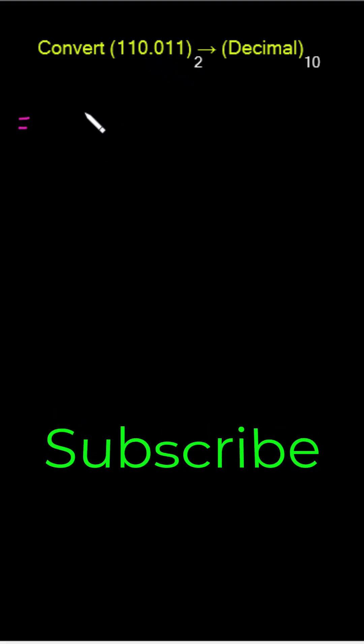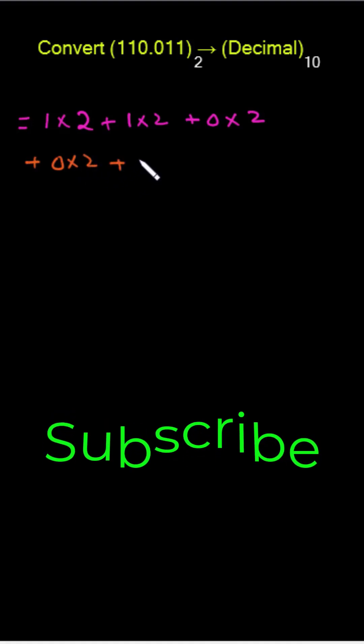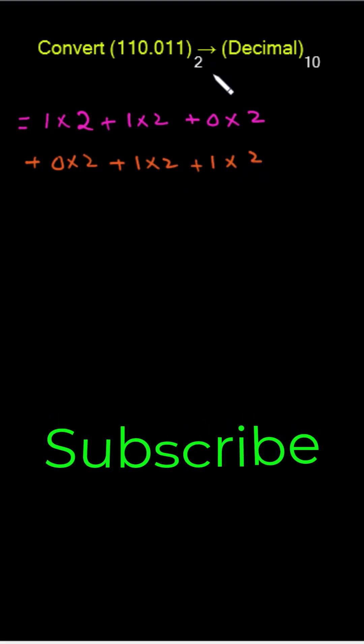Then distribute the power to each. So we have: 1 multiplied with 2, plus 1 multiplied with 2, plus 0 multiplied with 2. This is for the whole part. Now for the binary fraction: 0 multiplied with 2, plus 1 multiplied with 2, then this 1 multiplied with 2.